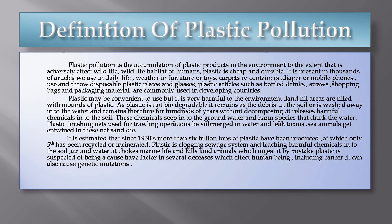It is estimated that since the 1950s, more than six billion tons of plastic have been produced, of which only a fifth has been recycled or incinerated. Plastic is clogging the seaway system and leaching harmful chemicals into the soil, air, and water. It chokes marine life and kills land animals which ingest it by mistake. Plastic is also suspected of being a contributing factor in several diseases affecting human beings, including cancer, and it can also cause genetic mutations.